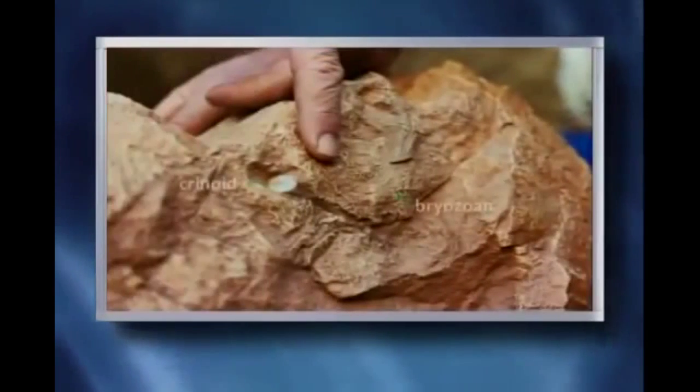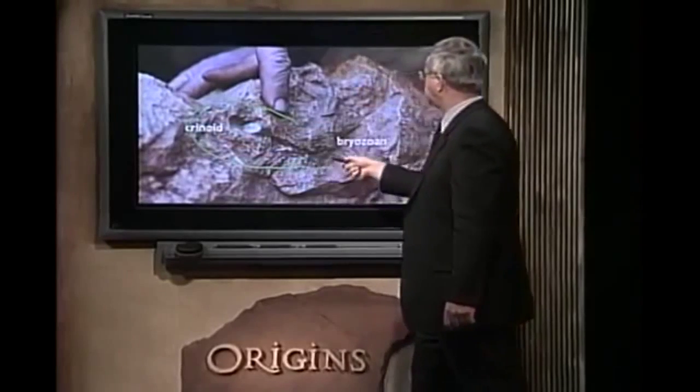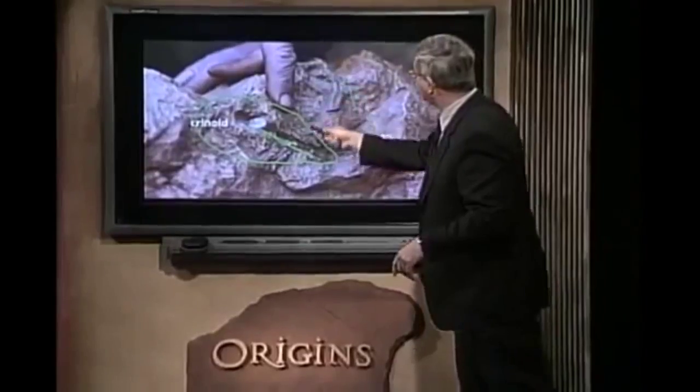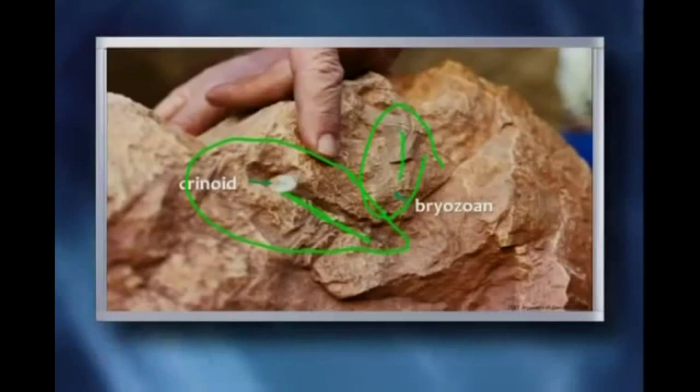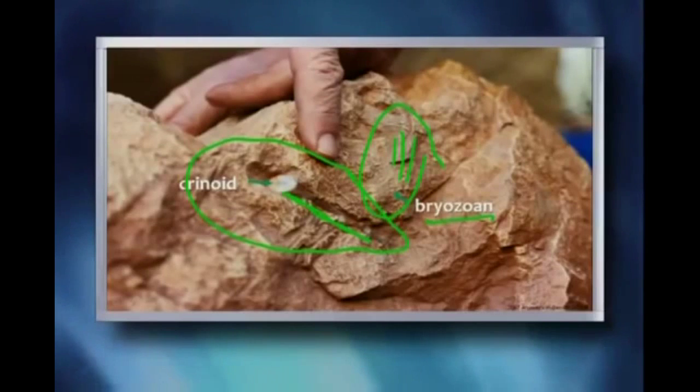What's exciting about this Redwall Limestone? It's full of fossils — marine fossils up on the continent, evidence of ocean waters flowing up onto the continent. We can see a crinoid, which is a sea animal that looked like a plant but actually had fern-like tentacles. Over here we see a bryozoan — a lace coral. These are broken remains in this limestone, and both of these creatures still exist in the ocean today.